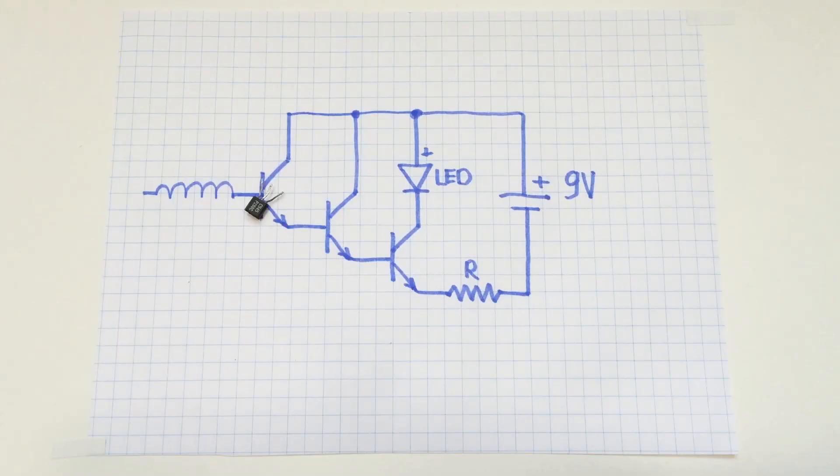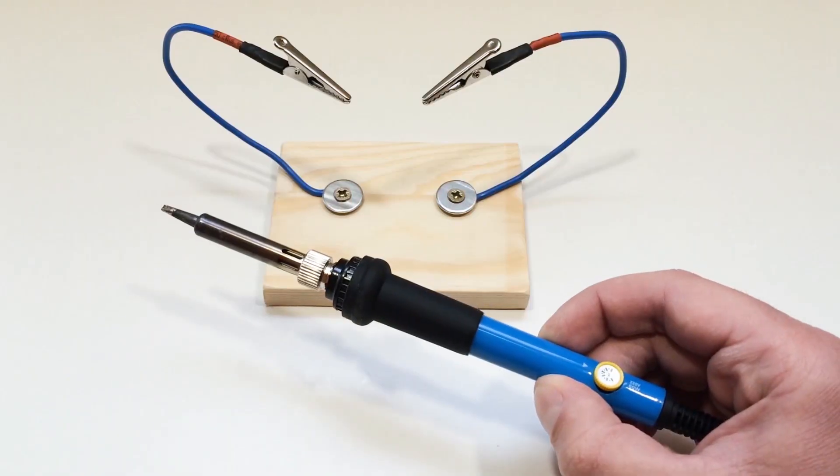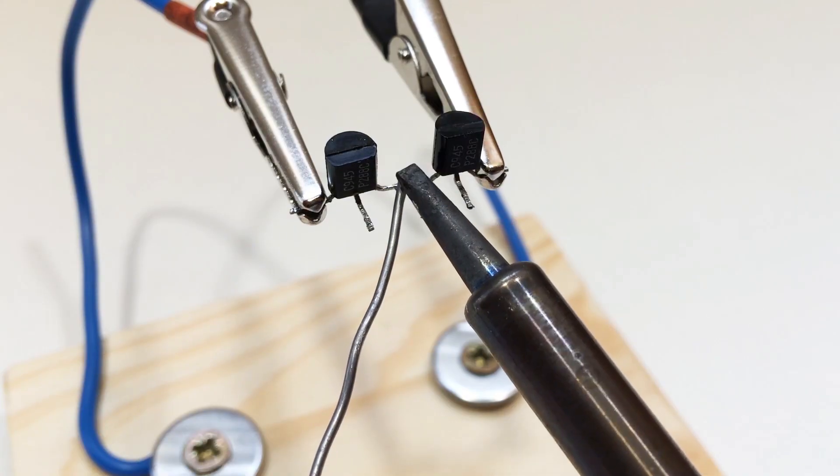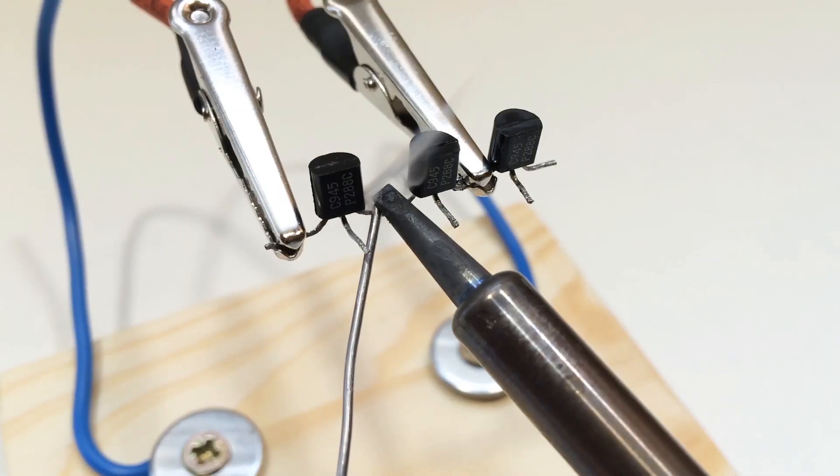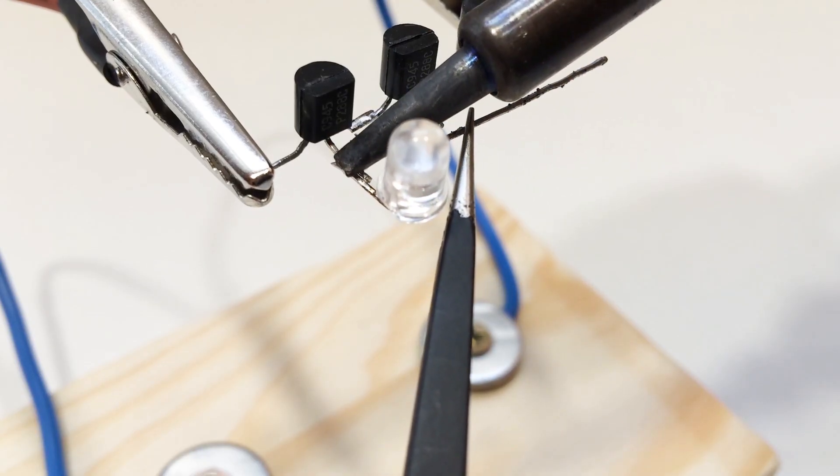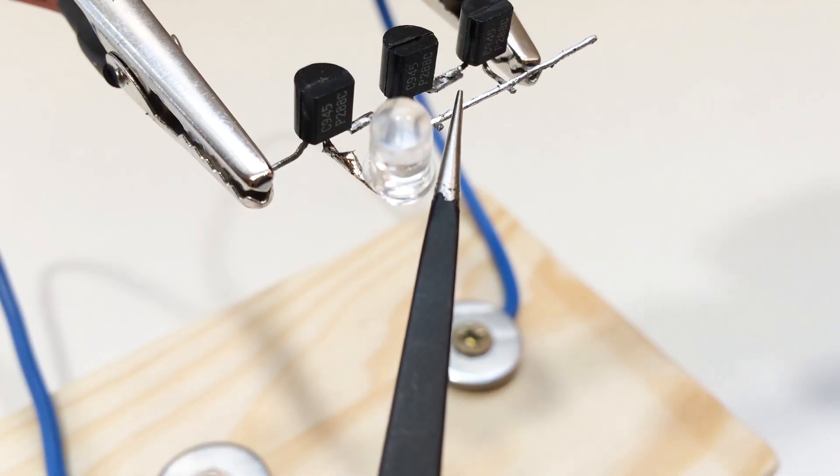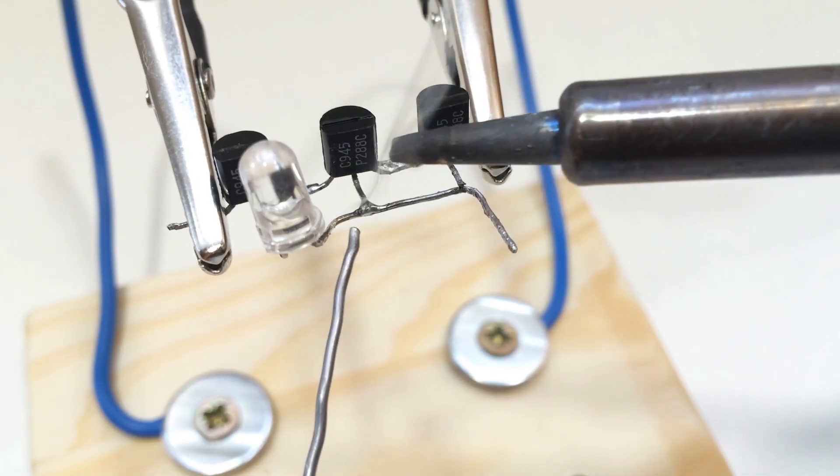Now let's assemble the circuit. The first transistor connects directly to the antenna. It picks up weak signals. The second transistor amplifies that signal, and the third transistor acts like a switch. Once the signal is strong enough, it opens the path for current to light up the LED.